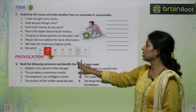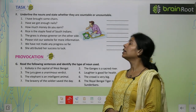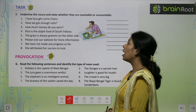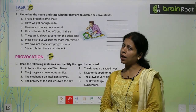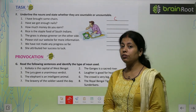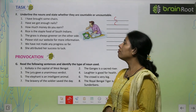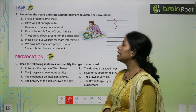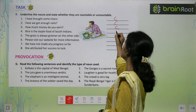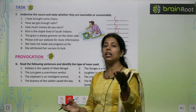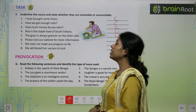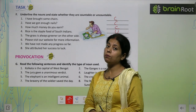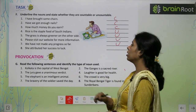Exercise: Underline the nouns and state whether they are countable or uncountable. 'I have brought some chairs' — chairs are countable. 'Have you got enough nails?' — nails are countable. 'How much money do you earn?' — money is countable. 'Rice is the staple food of South Indians' — rice is uncountable. 'The grass is always greener on the other side' — grass is uncountable. 'We have not made any progress so far' — progress is uncountable.